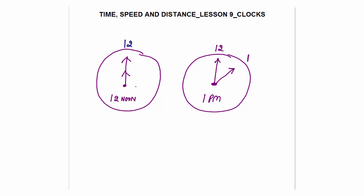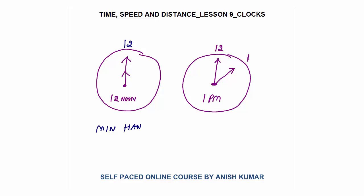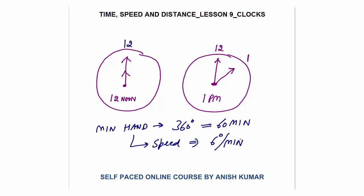Now let's discuss how both hands of the clock move. Both hands move in the same direction. At 12 noon both hands are at the same point. At 1 o'clock the hour hand is at 1 and the minute hand comes back to 12, having completed a full rotation of 360 degrees in one hour. So the speed of the minute hand is 360 degrees in 60 minutes, which is 6 degrees per minute.